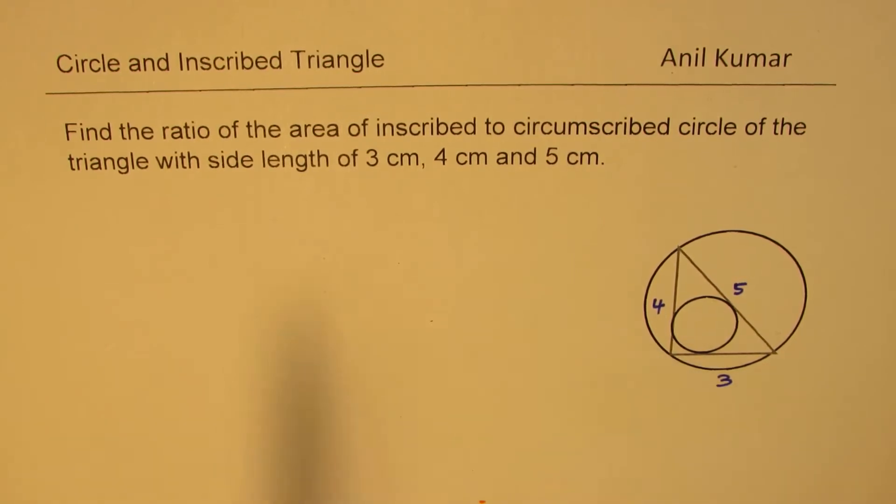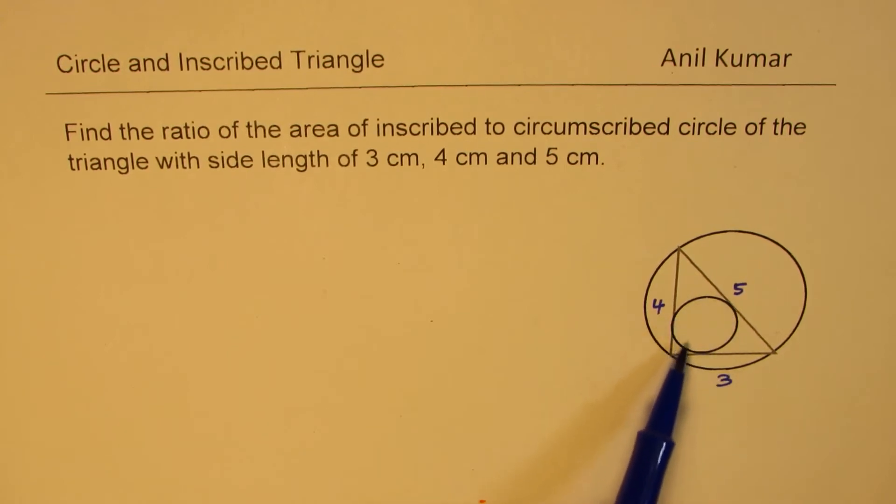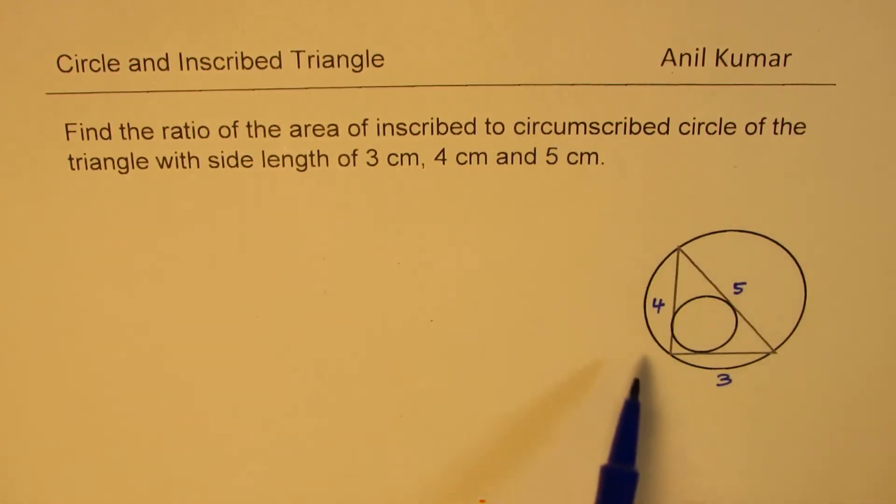We need to find area of the inscribed, that means the smaller circle, to circumscribed, the bigger circle that is circumscribed. Let us see how to figure this out.